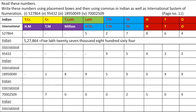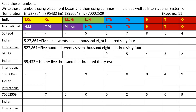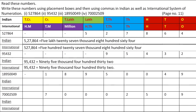And in the International System, the number name will be 527,864. Let's see the next number. The next number is 95,432. As 95 is coming in the group of thousands and 432 is coming in the group of 1s, the number name in the Indian Number System is 95,432. And in the International Number System, it's 95,432 — same only.